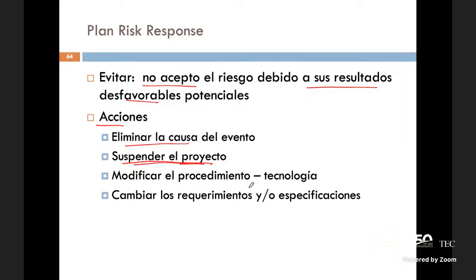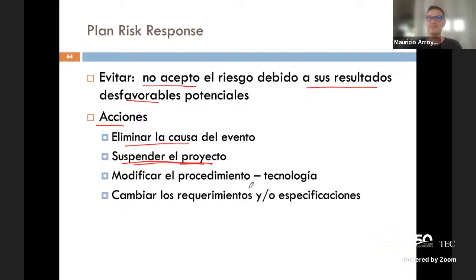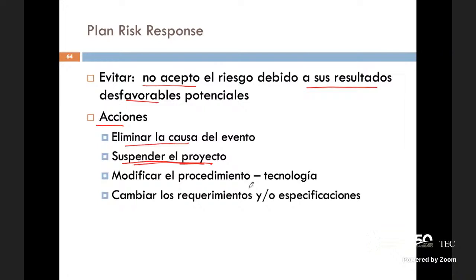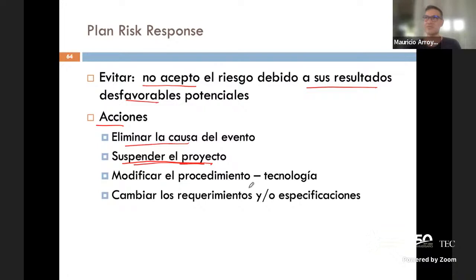Eso de fuerza mayor es súper ambiguo, como la calidad. Seguramente es muy fácil justificar una causa de fuerza mayor si hay un terremoto, o si tuvimos una circunstancia horrible que hizo que se cayera todo el sistema político-social, o si se quemaron las cosas en un incendio.